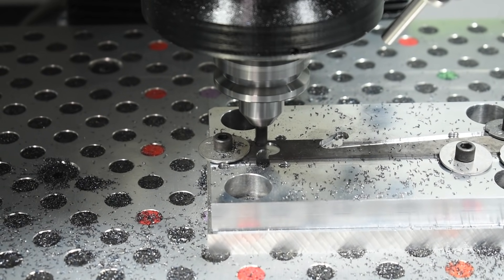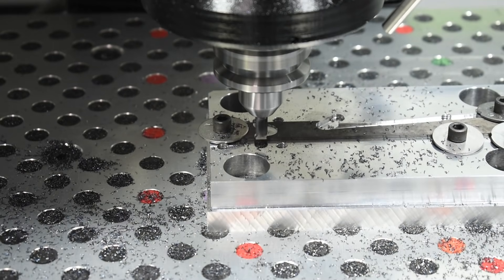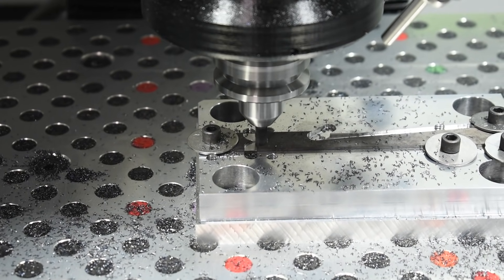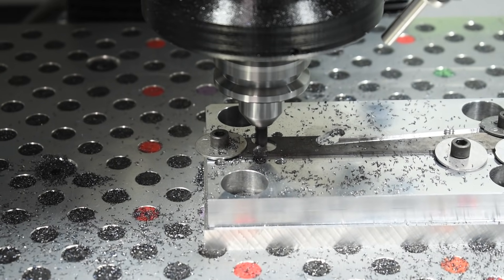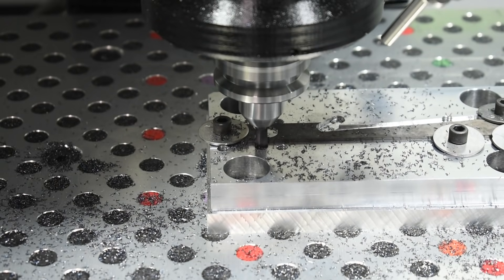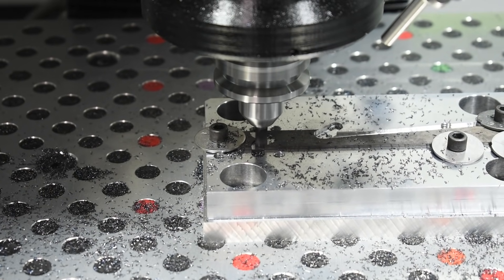My feed per tooth was half a thou. My axial depth of cut was ten thou. It sounds good, it looks good, and again, it wasn't worth trying to just rush it, because I also only had one extra piece of material. Turtle wins the race, right? Slow and consistent. Every time.